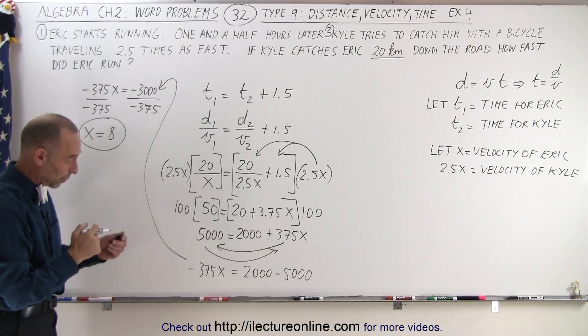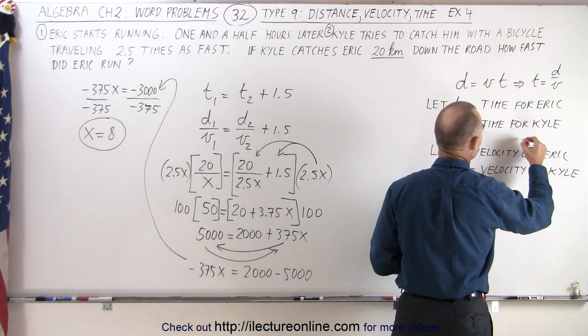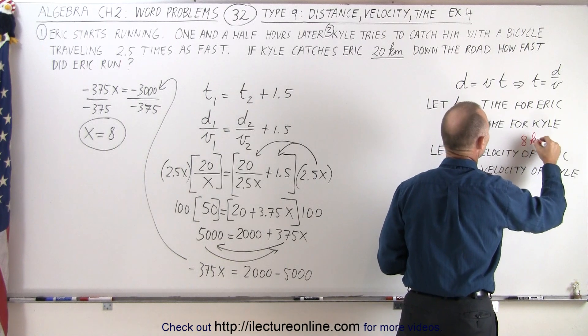Now let's go back and see what we defined x as. Notice that x was the velocity of Eric. That means Eric will be traveling at 8 kilometers per hour.